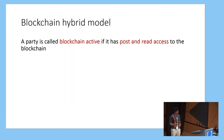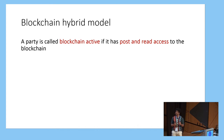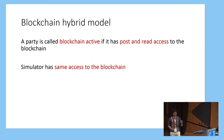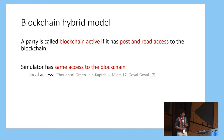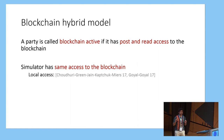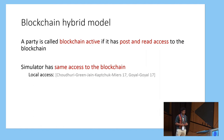We're talking about what we call a blockchain hybrid model. A party is blockchain active if it can read and write to the blockchain. An important thing to note when establishing the model is that the simulator has the same access to the blockchain as every other party. This is in contrast to some other recent work where the simulator can potentially rewind the blockchain. In our setting, the blockchain is global — other protocols and parties can also use it independently.